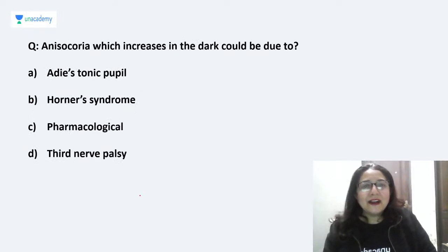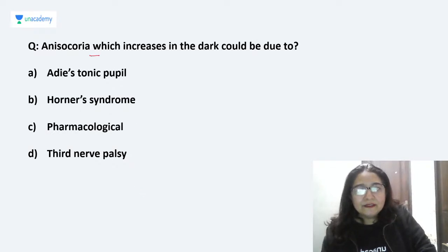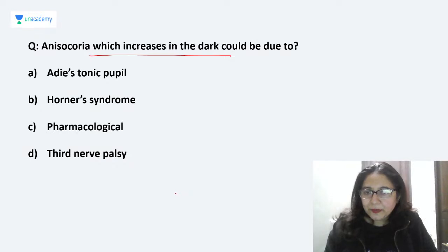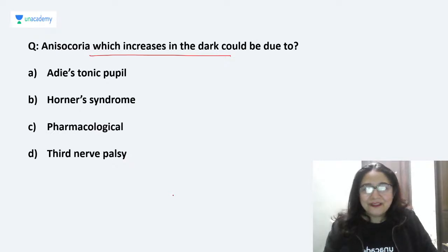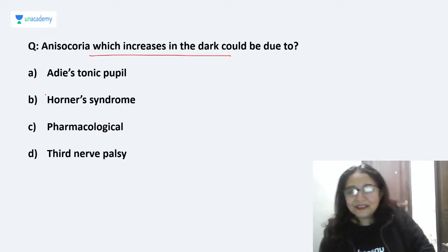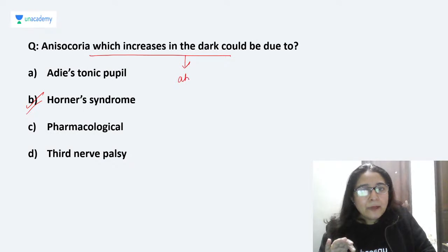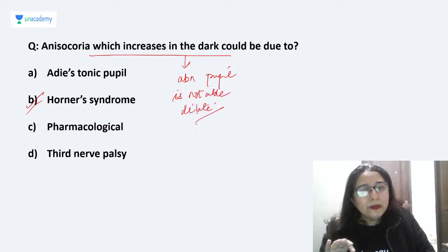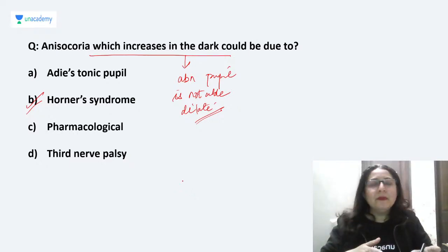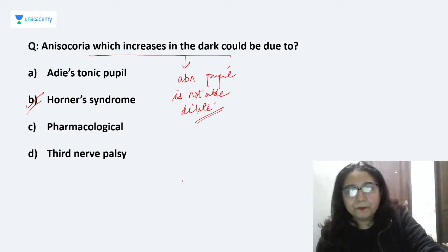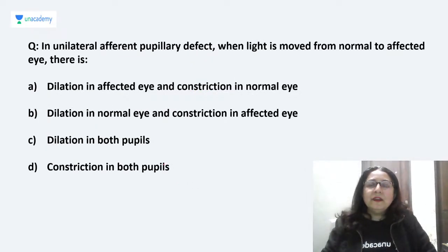MCQ: Anisocoria which increases in the dark could be due to — Adie's tonic pupil, Horner's syndrome, pharmacological dilatation, or third nerve palsy? The answer is Horner's syndrome. Anisocoria increasing in dark means the abnormal pupil is not able to dilate, indicating a problem in the sympathetic system.